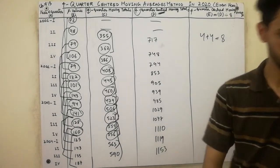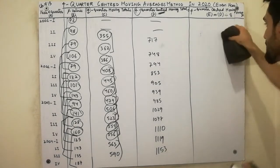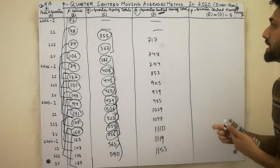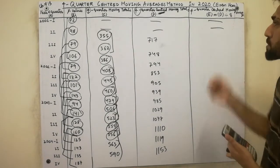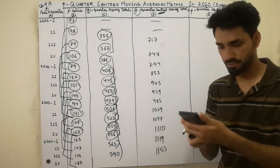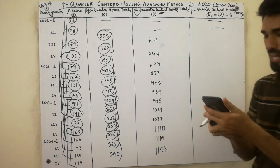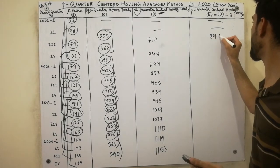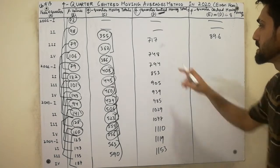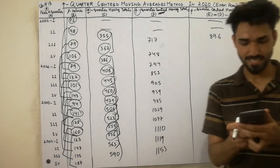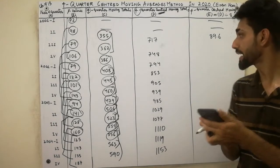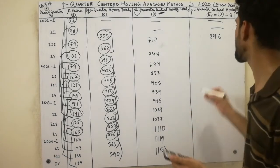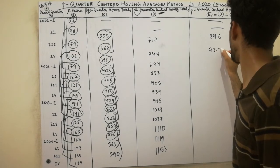Now I am solving that. The next point is very very important, so must watch this video. The next point: 7 plus 7 divided by 8 — that entry is going to be blank because they have no corresponding pair. Then 717 divided by 8, we get the value 89.6. Next value: 748 divided by 8 — we get the value 93.5.